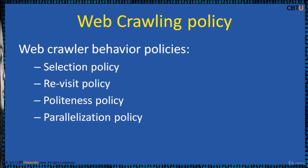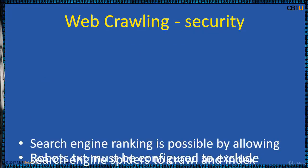Webcrawling policy should not annoy the target. It follows specific behavior policies: Selection policy, which states which pages to download; Revisit policy, which checks for changes to pages; Politeness policy, to avoid overloading websites as crawlers consume resources on the remote server impacting performance; and Parallelization policy, which says how to coordinate distributed web crawlers.